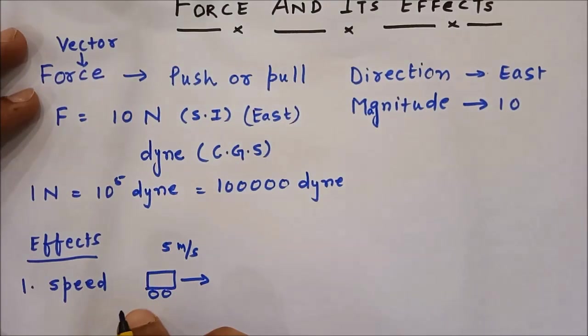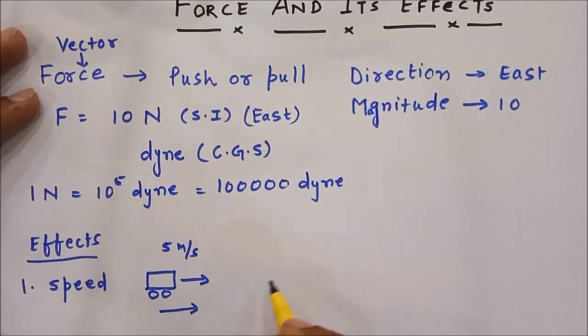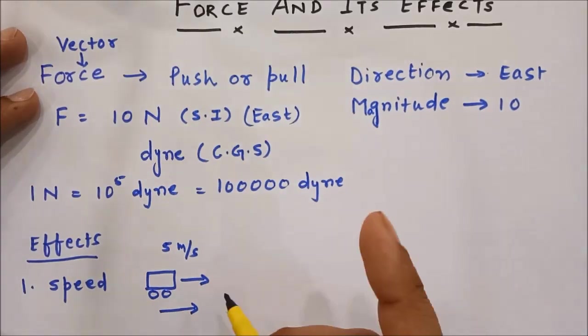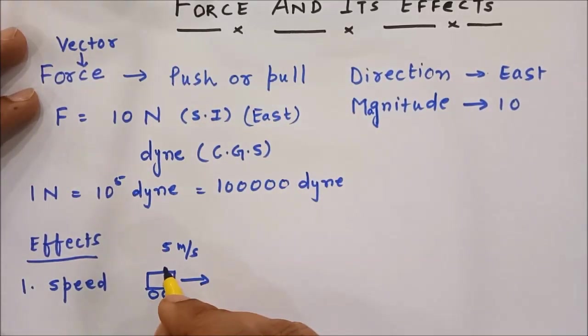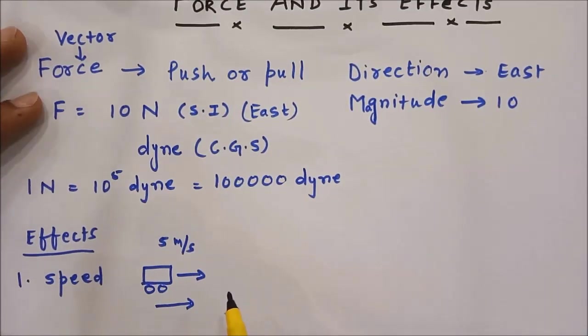When you exert a force on this body in this direction, then the speed of the body increases. So the first effect of application of force on a body is the increase in the speed.